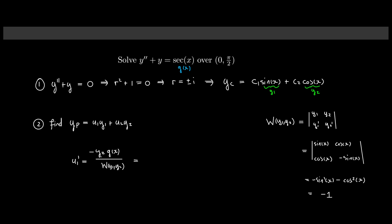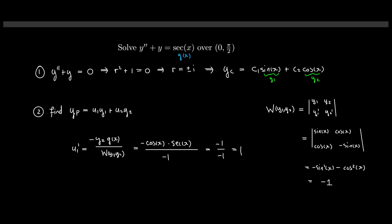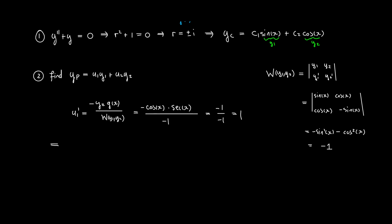Plugging in everything: y2 is cos(x), so u1 prime equals negative cos(x) times sec(x) divided by the Wronskian, which is negative one. Since sec(x) is one over cos(x), cos(x) times sec(x) equals one, so negative one divided by negative one gives u1 prime equals one. Therefore u1 can be taken to be x. It's as easy as that.